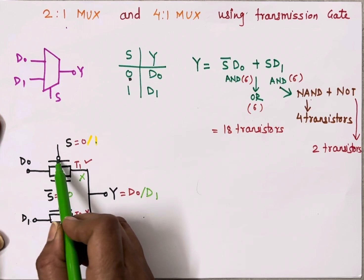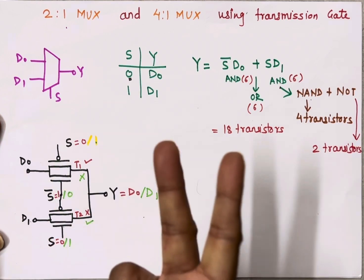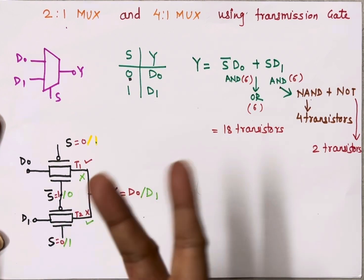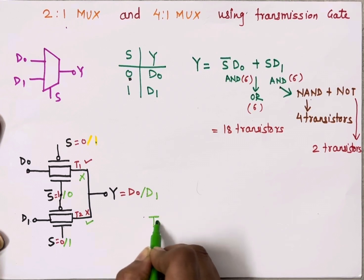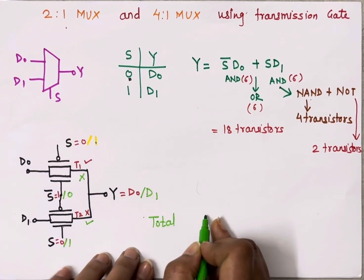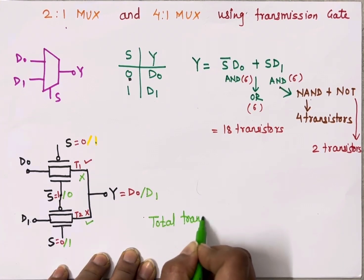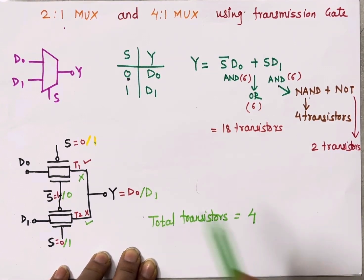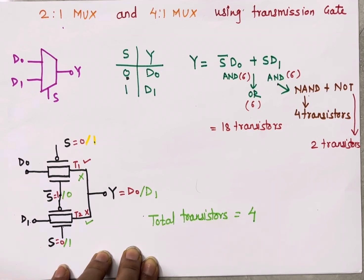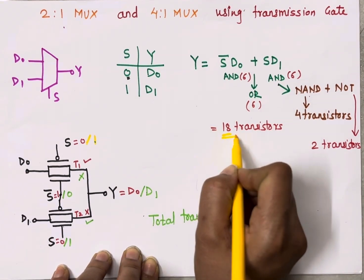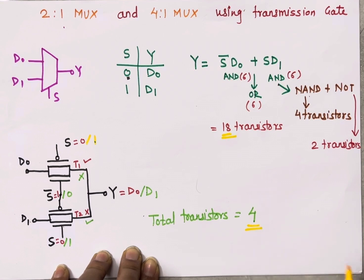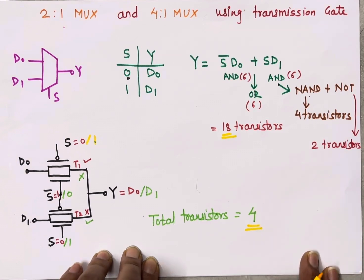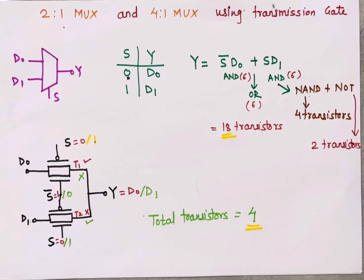In this circuit, T1 uses 1 PMOS and 1 NMOS — 2 transistors — and T2 uses 2 more transistors, so the total number of transistors is only 4. Here you can see the difference: using the traditional method, 18 transistors are required, whereas using transmission gates only 4 transistors are required. So by using transmission gates we can implement circuits with a much smaller number of transistors.